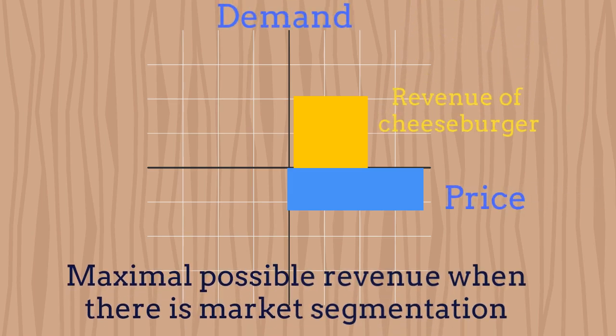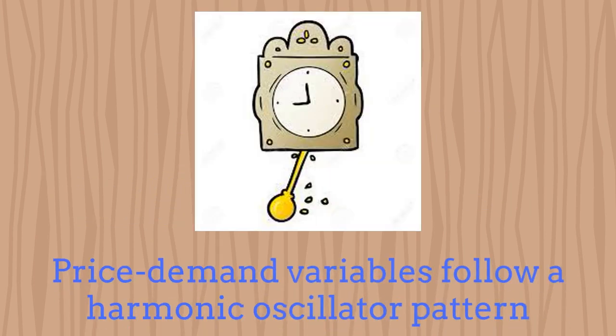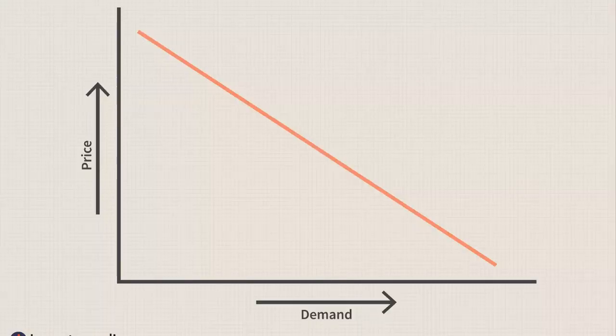It has been proved that market segmentation increases the revenue. In fact, the total revenue increases when we have market segmentation. With market segmentation for two products, the total maximal revenue would be equal to the sum of the areas of the squares appearing in the figure. Note that in this particular case, the higher the price of the product is, the lower would be its demand. When customers feel that the offered products are mostly the same, most of them will naturally select the cheapest one. In such situations, the price-demand relation would follow a harmonic oscillator pattern.